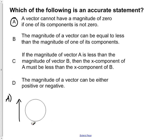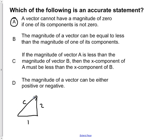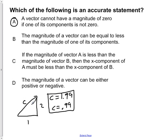Choice B states that the magnitude of a vector can be equal to or less than the magnitude of one of its components. Let's say we have component values of one and two. This is saying our resultant c can be equal to 1.99 or c equals 0.99 — just smaller than one of each of the components. To solve for the length of c, we use the Pythagorean theorem: c squared equals 2 squared plus 1 squared. Taking the square root of both sides, we can solve for c.